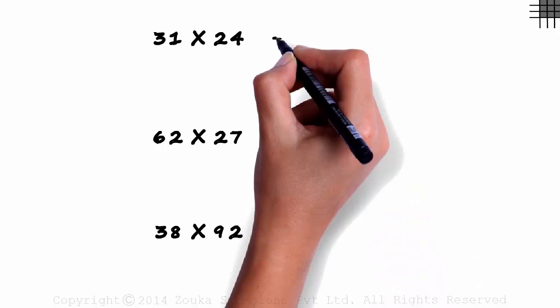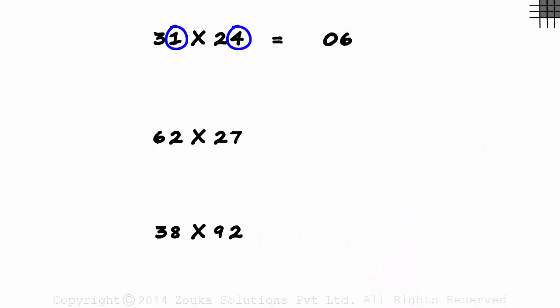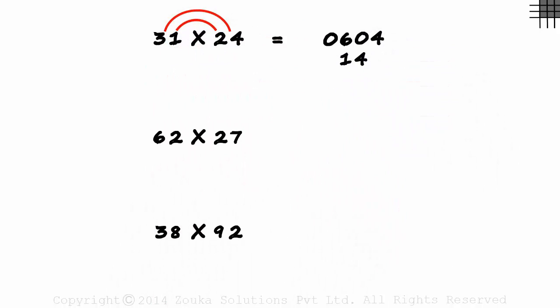Let's solve this quickly. 3 times 2 is 06, 1 times 4 is 04, and 2 plus 12 is 14. 744 is the correct answer.